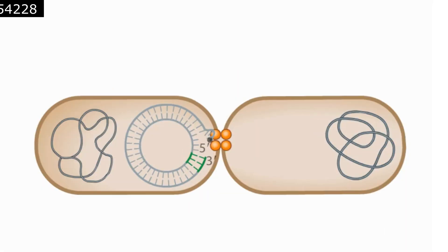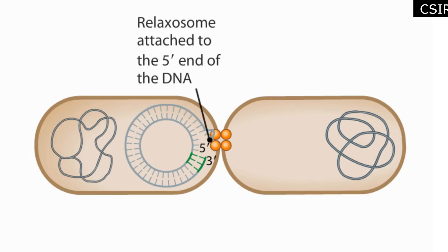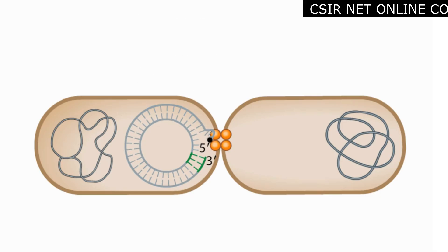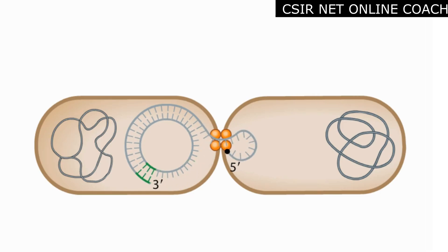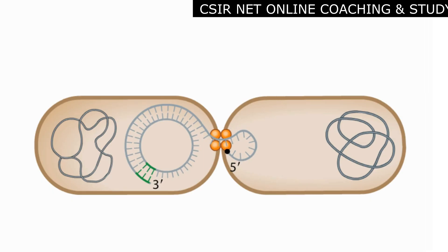The nick produces a 5 prime end and a 3 prime end on one of the DNA strands. The relaxosome remains bound to the 5 prime end of the nicked strand, and the DNA protein complex is transferred through a pore protein into the recipient, where it remains associated with the membrane while the rest of the strand is transferred through the pore.